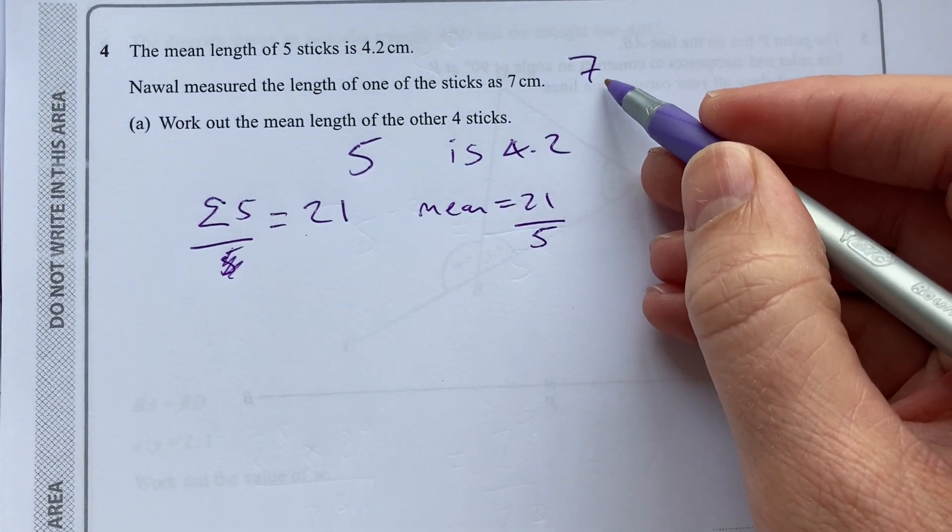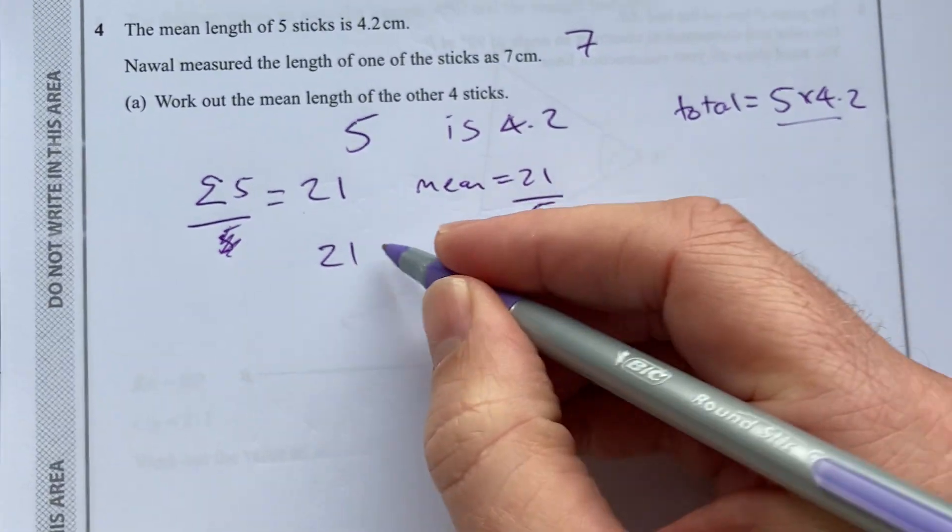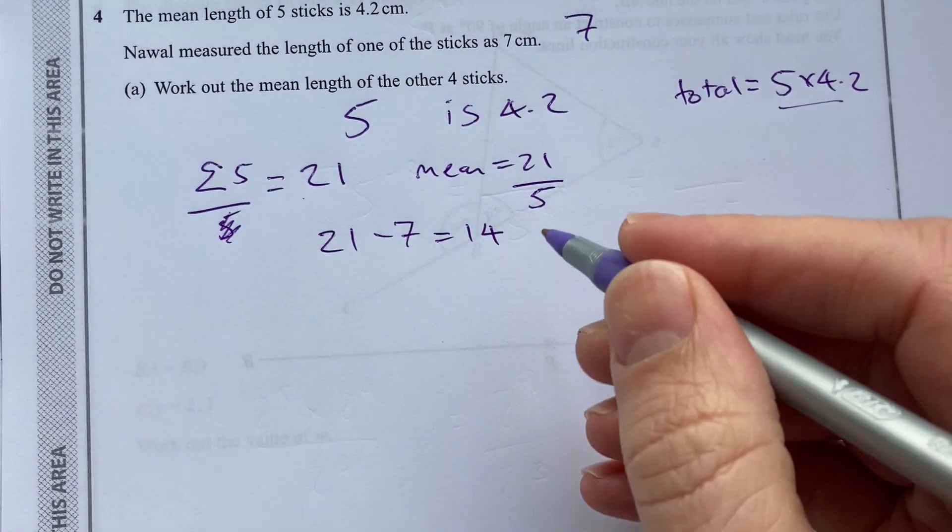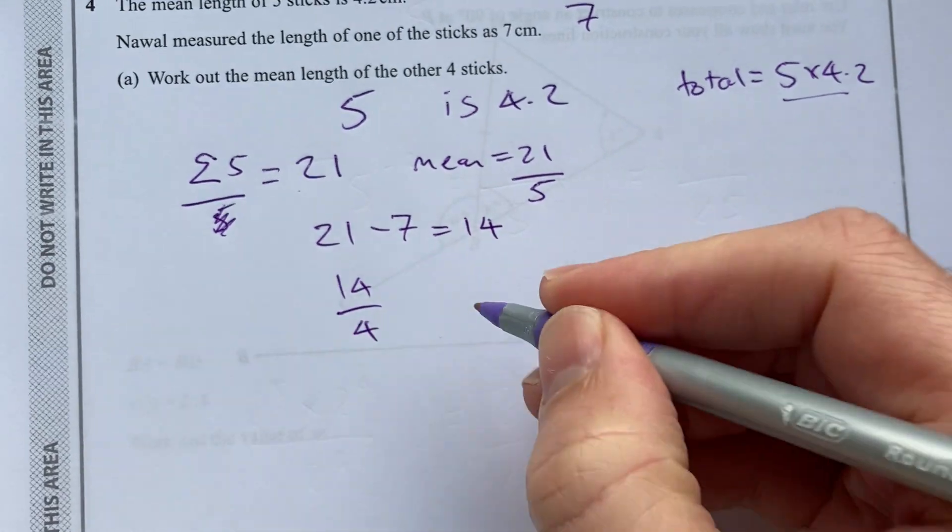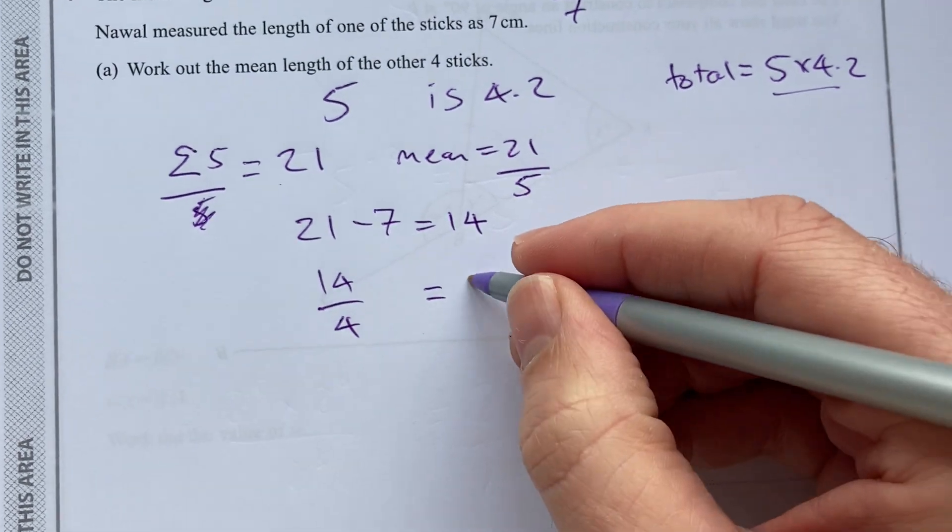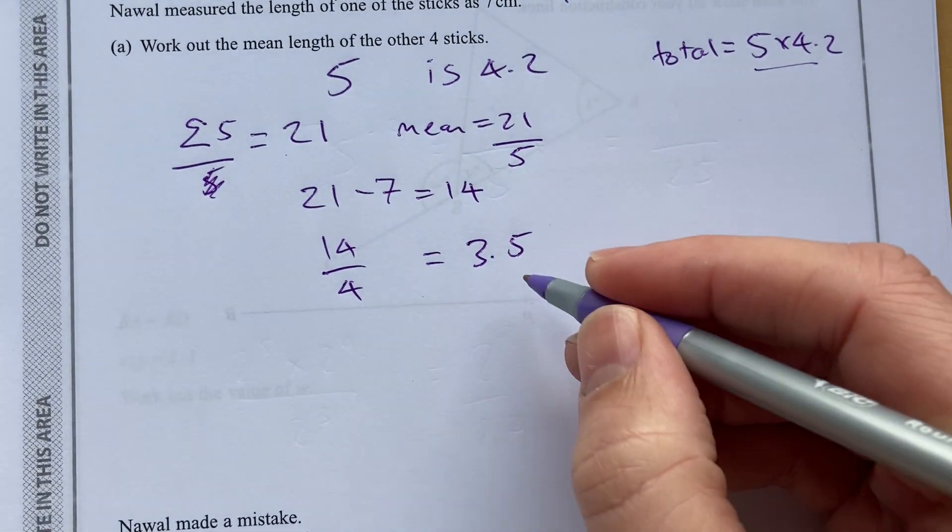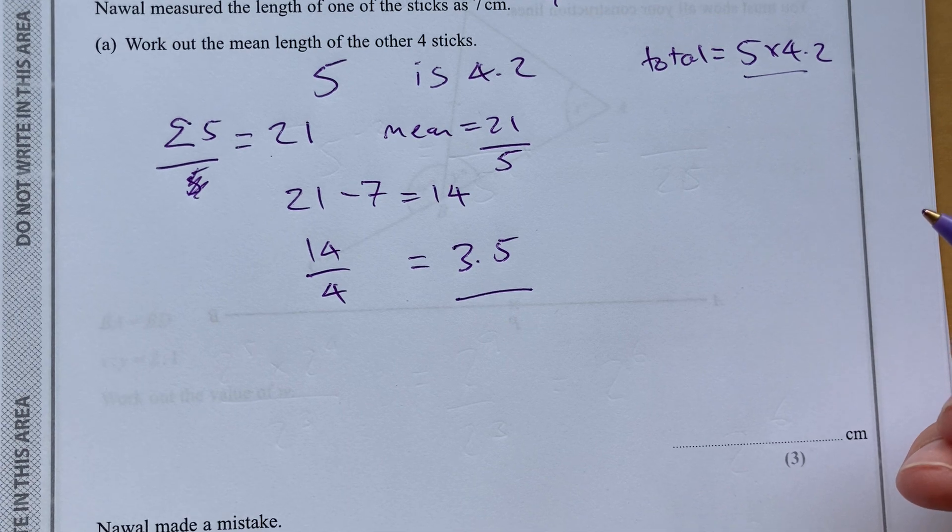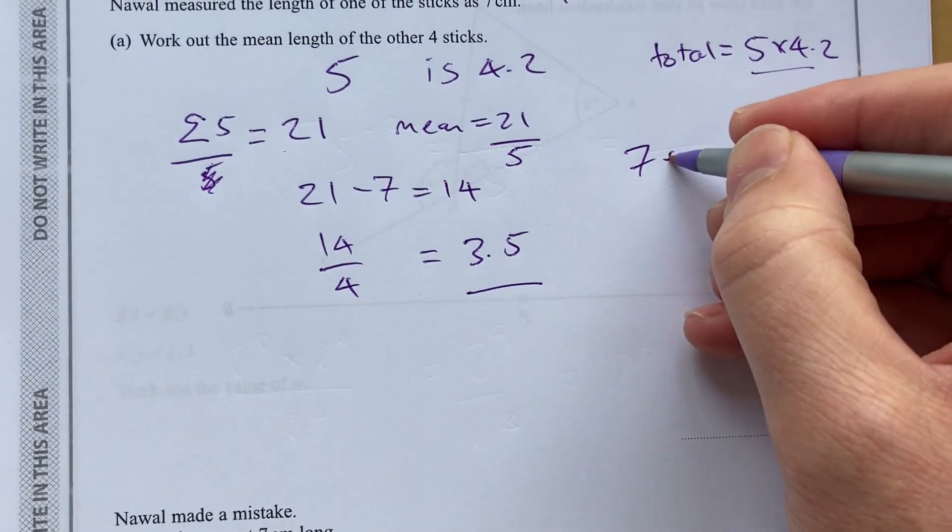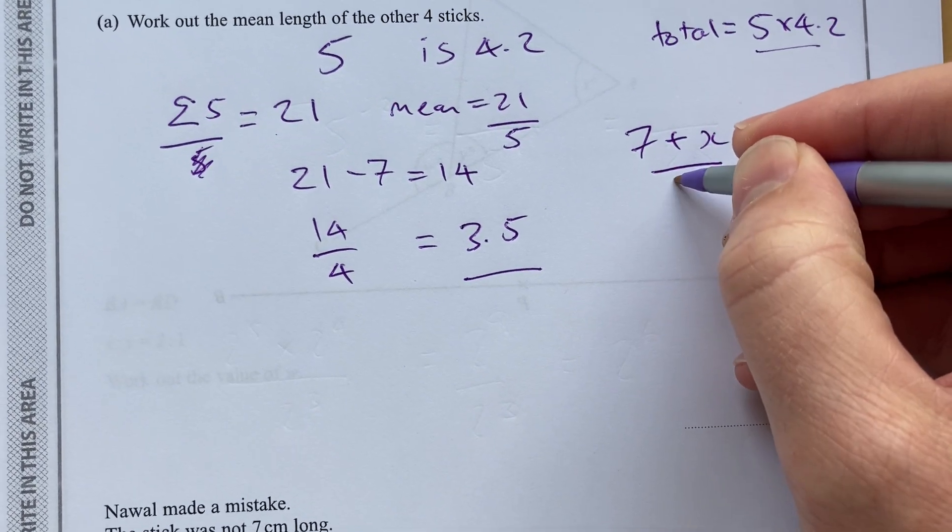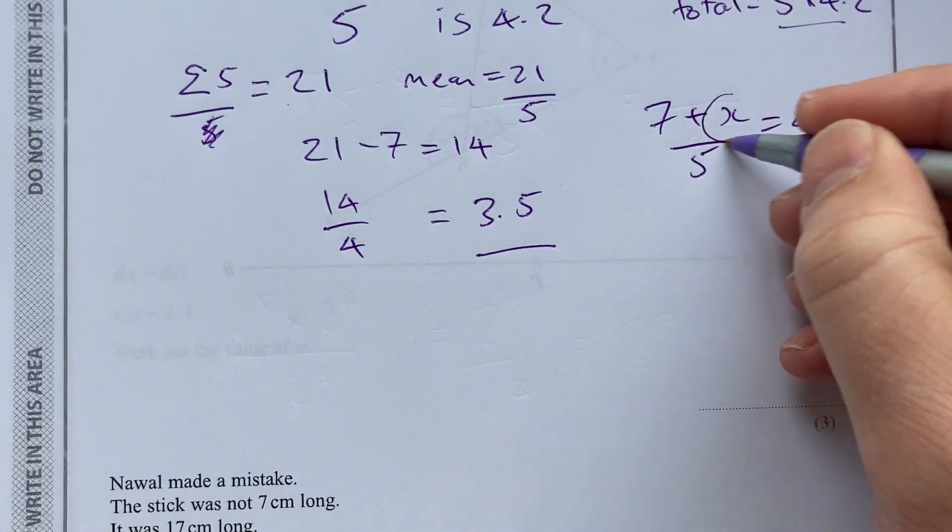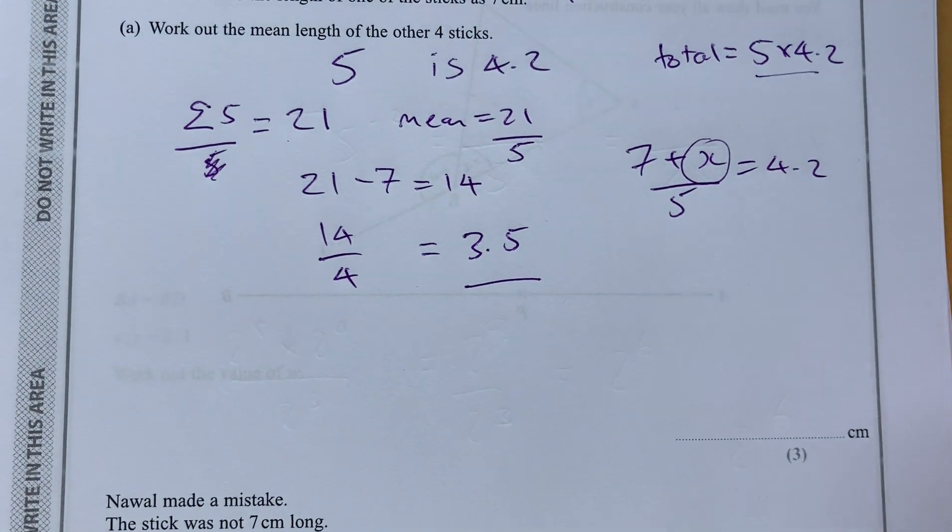So that would be 21 is the sum. But now if one of them is 7, I must take away 7 from that, leaving me 14. So now I've got 14 divided by 4, which would be 7 divided by 2 is 3.5. So the mean length of those four is 3.5.